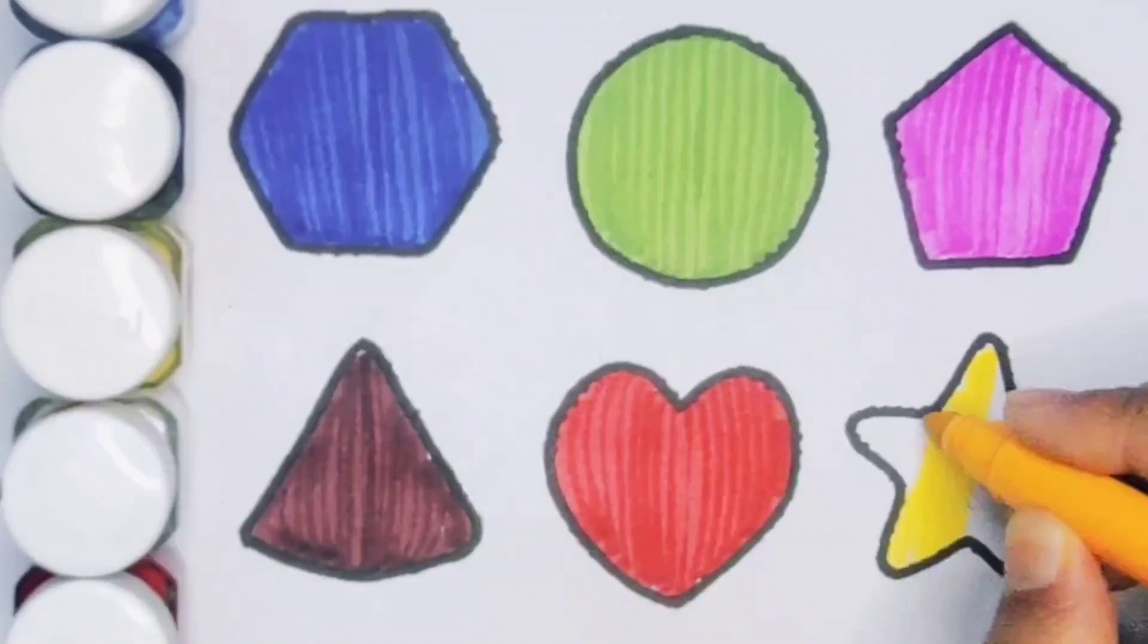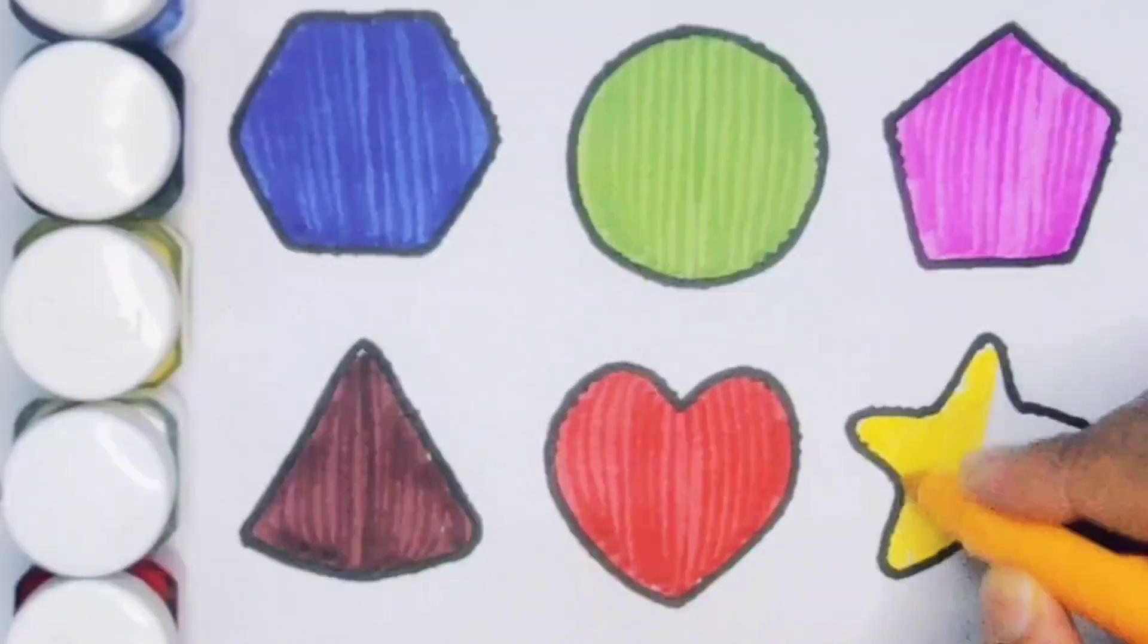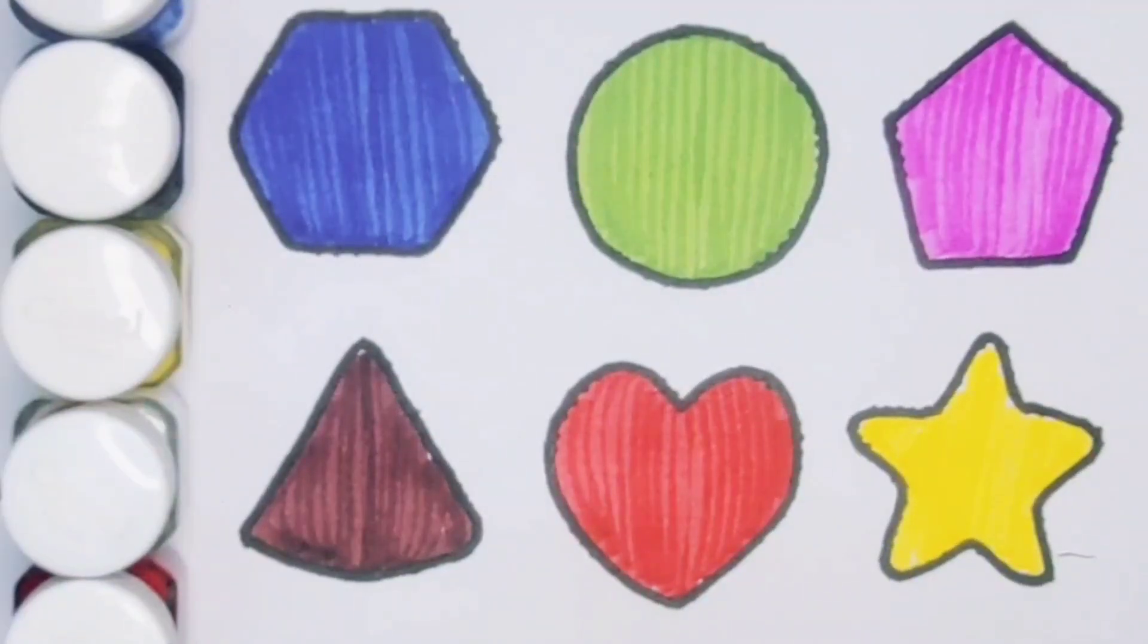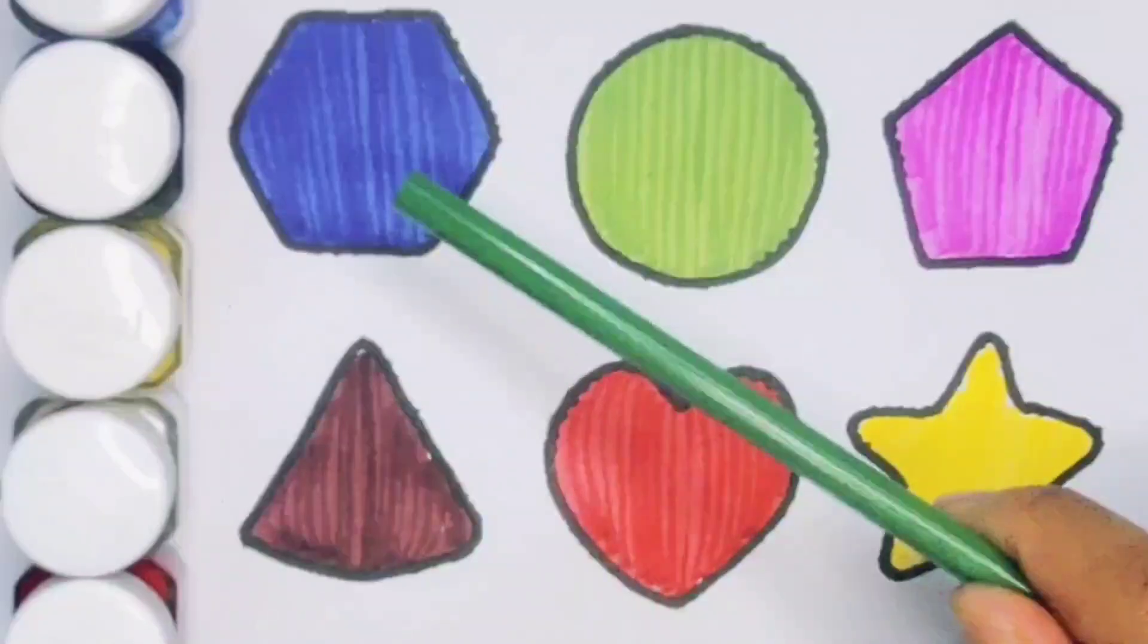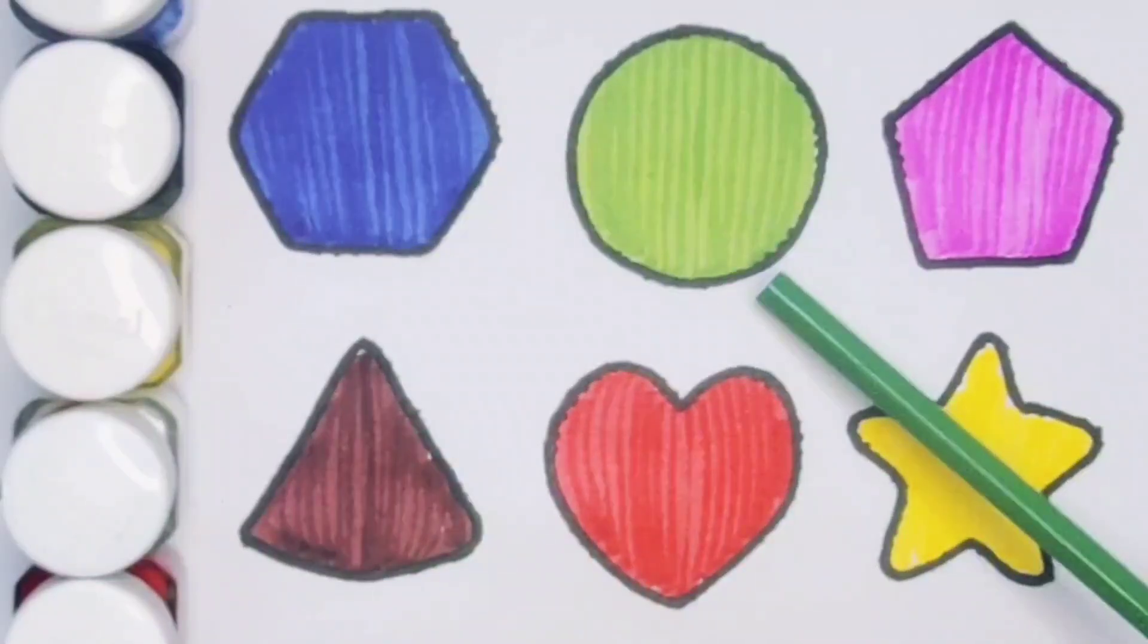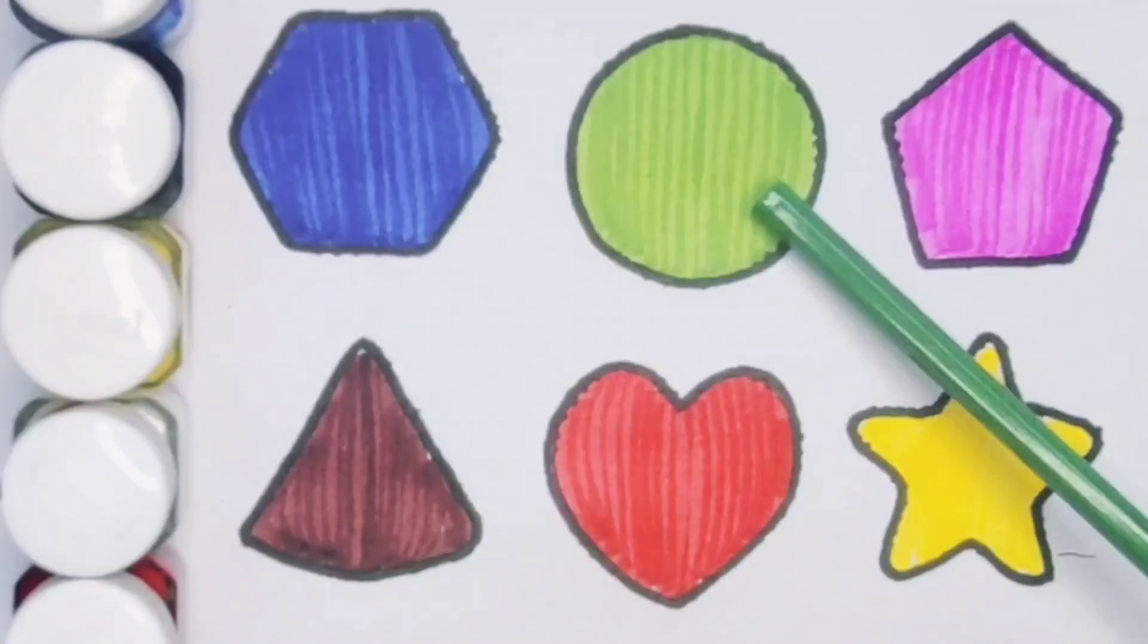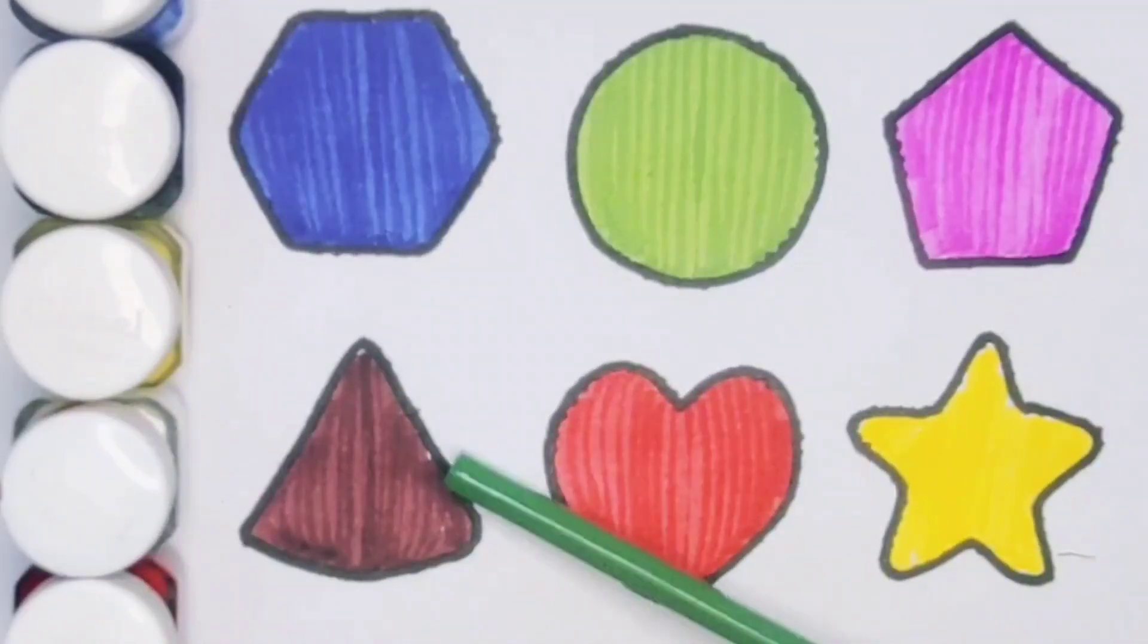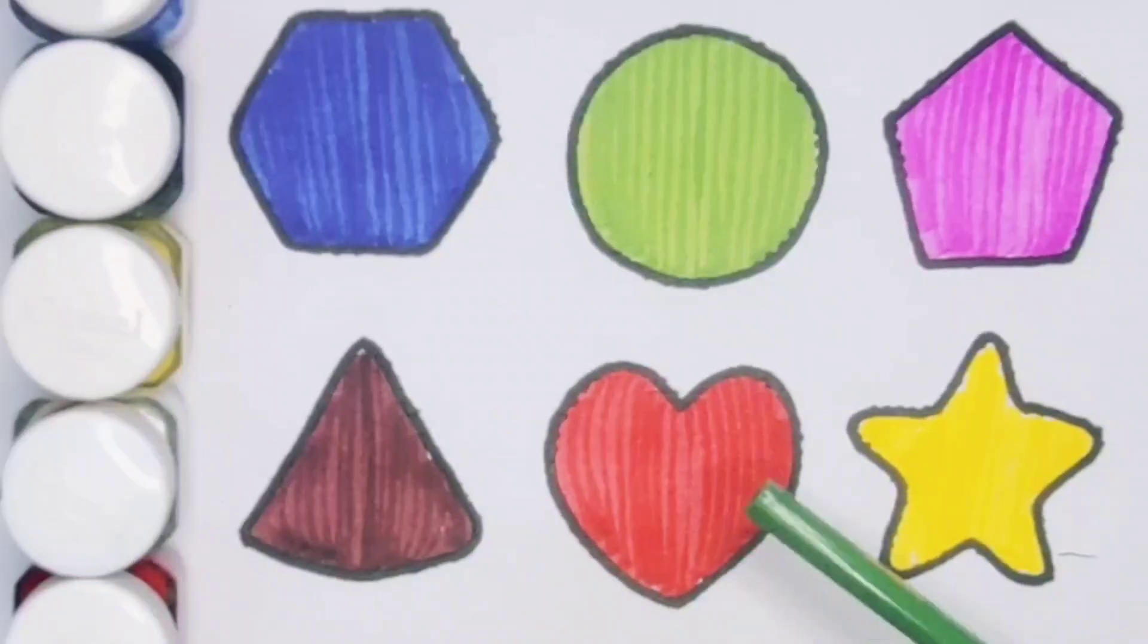What we learned: we learned blue color hexagon, green color circle, pink color pentagon, chocolate color triangle, red color heart, and yellow color star.